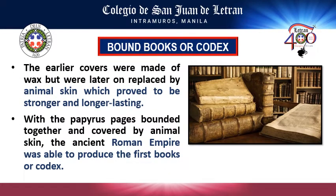One of the contributions of Rome is the codex, or bound book. The first cover made by the Romans was made of wax, but it was replaced by animal skin because it proved to be stronger and longer lasting.